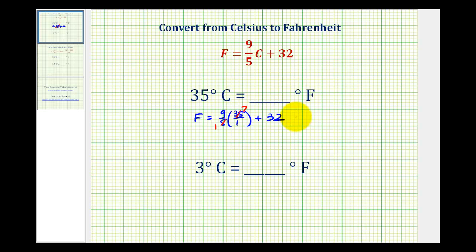So the temperature in Fahrenheit would be equal to 9 times 7, plus 32, which is 63, plus 32, which equals 95 degrees in Fahrenheit.